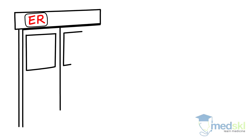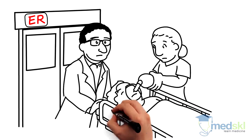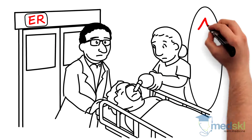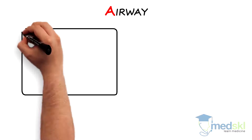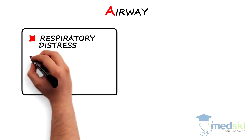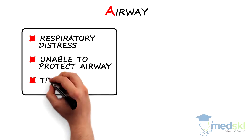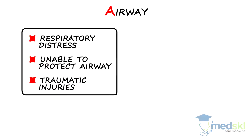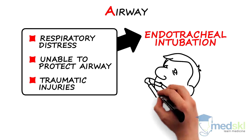Once in the emergency department, treatment begins with the primary survey: ABCDE. Airway: any patient with respiratory distress, inability to protect their airway, or with traumatic injuries should have their airway secured by endotracheal intubation.